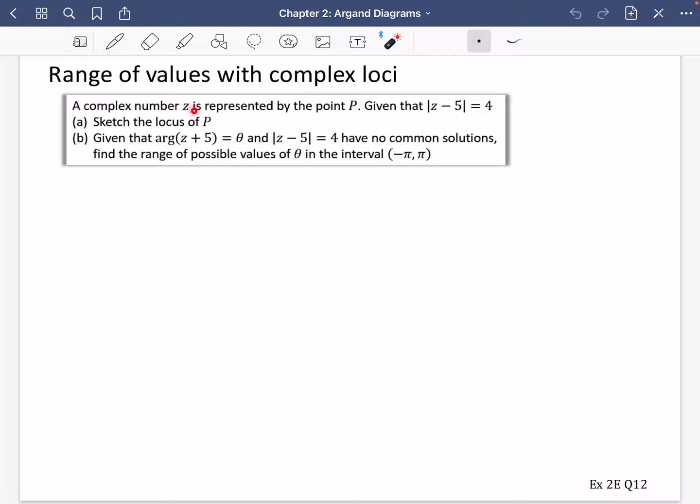So I've said here a complex number z is represented by the point P, given that |z - 5| = 4, sketch the locus of P. Okay, well that's going to be pretty simple to begin with. First of all, we can tell it's going to be a circle. The centre of the circle is going to be (5, 0) and the radius is 4. So let's go on with that one.